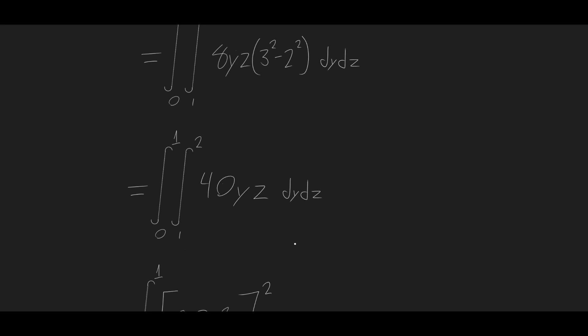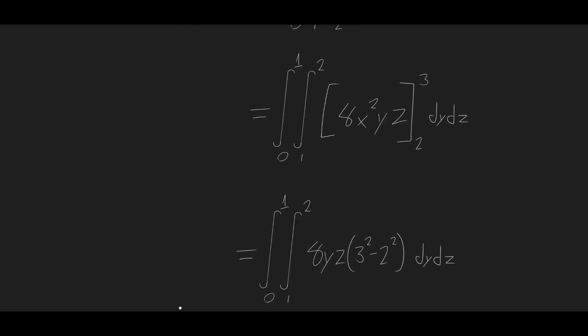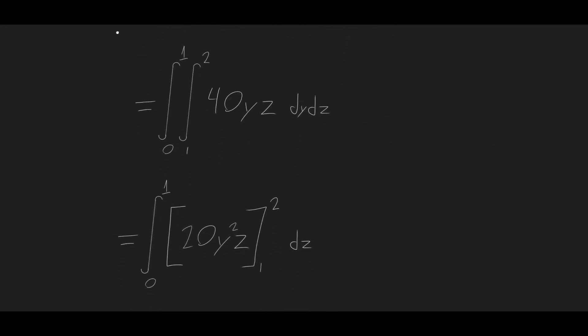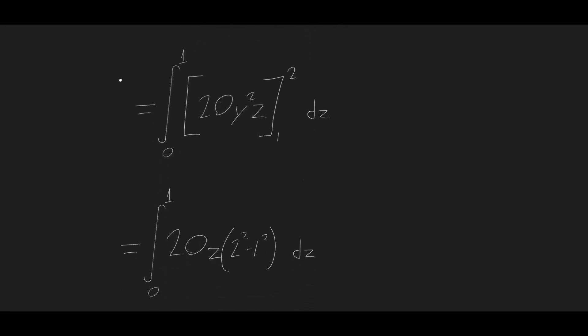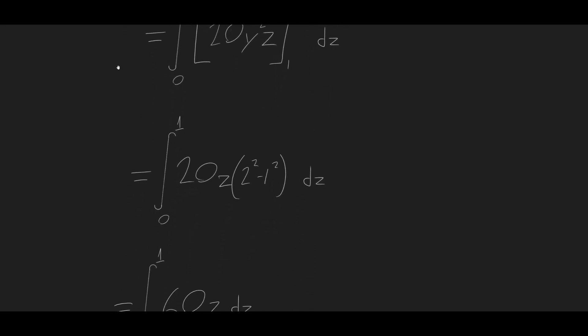And then we evaluate the second integral, which is still on the inside. And this gives us 20y squared times z from 1 to 2.